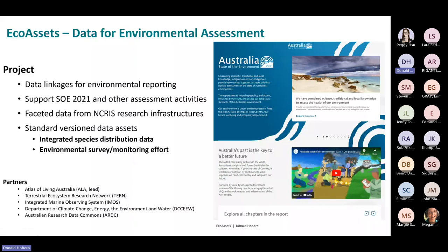Following discussions with the SOE authors, we identified two broad areas where they felt they needed better access to the data being collected by the ALA, TERN, and IMOS — specifically improved and more faceted access to integrated species distribution data. In practical terms, this related to ensuring it was easy for any portion of the continent to get time-based lists of how many threatened species or introduced species had been recorded in that area.